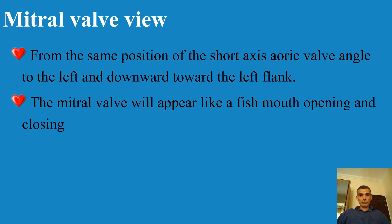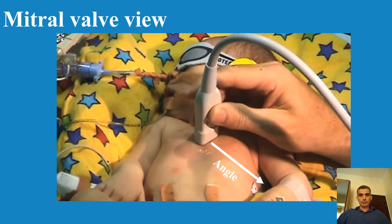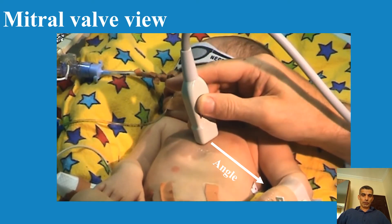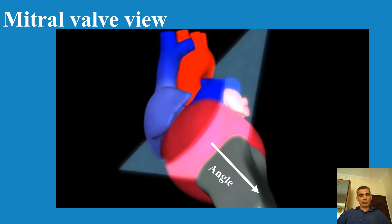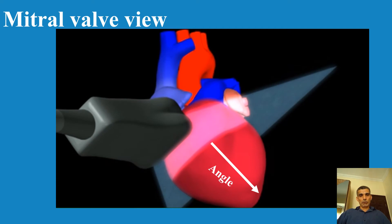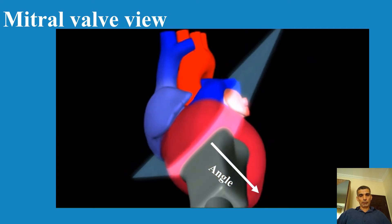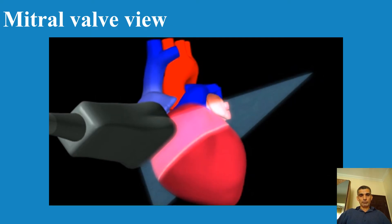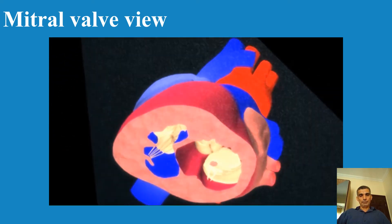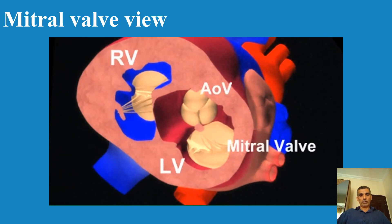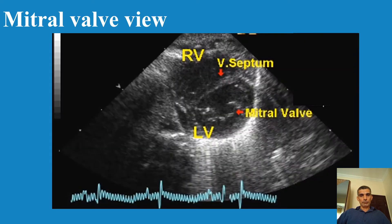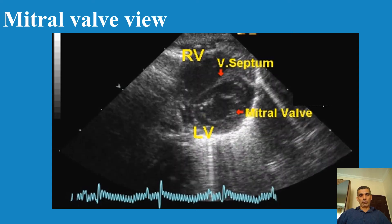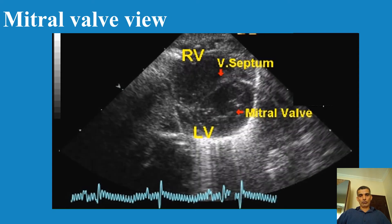To see the mitral valve in short axis, same position — angulate to the left and downward toward the left front. Move the transducer up and to the right to angulate the beam down and to the left. Once you open the heart, you see the mitral valve in short axis. In 2D you can see the mitral valve, the interventricular septum, the right ventricle, and the left ventricle containing the mitral valve.